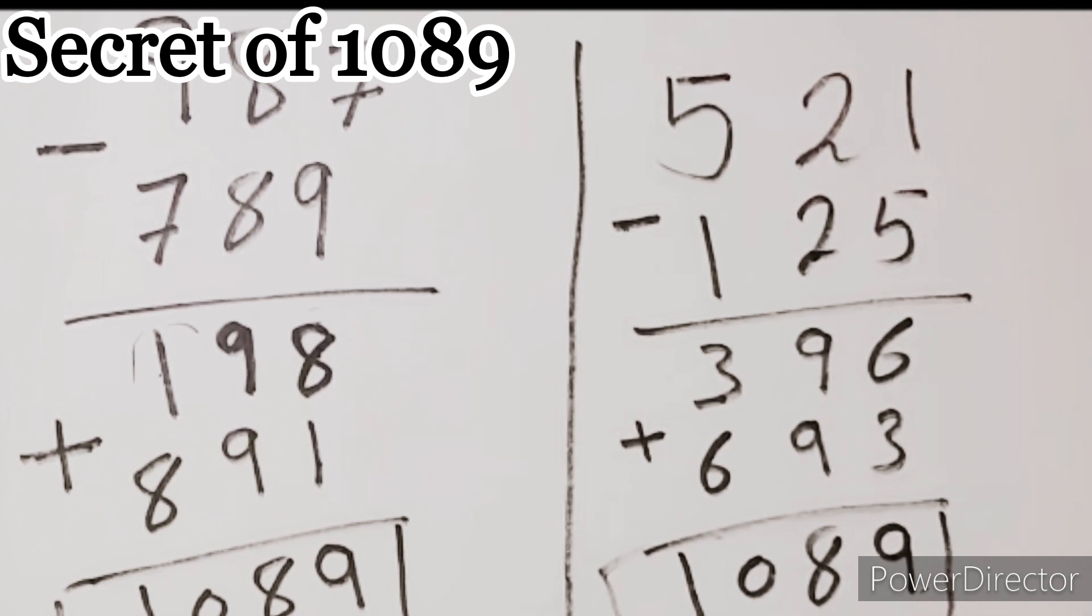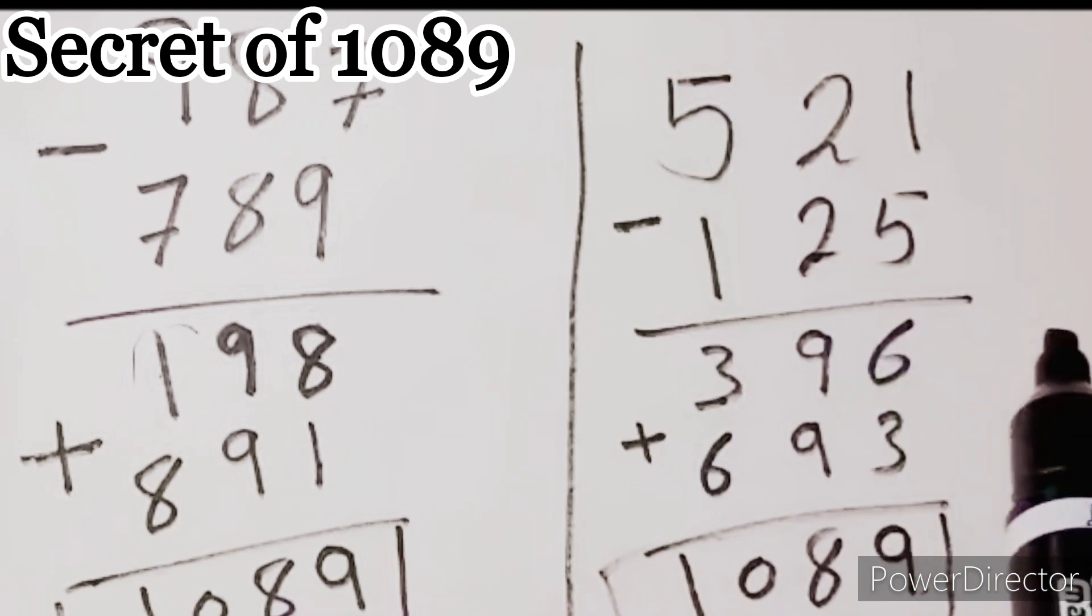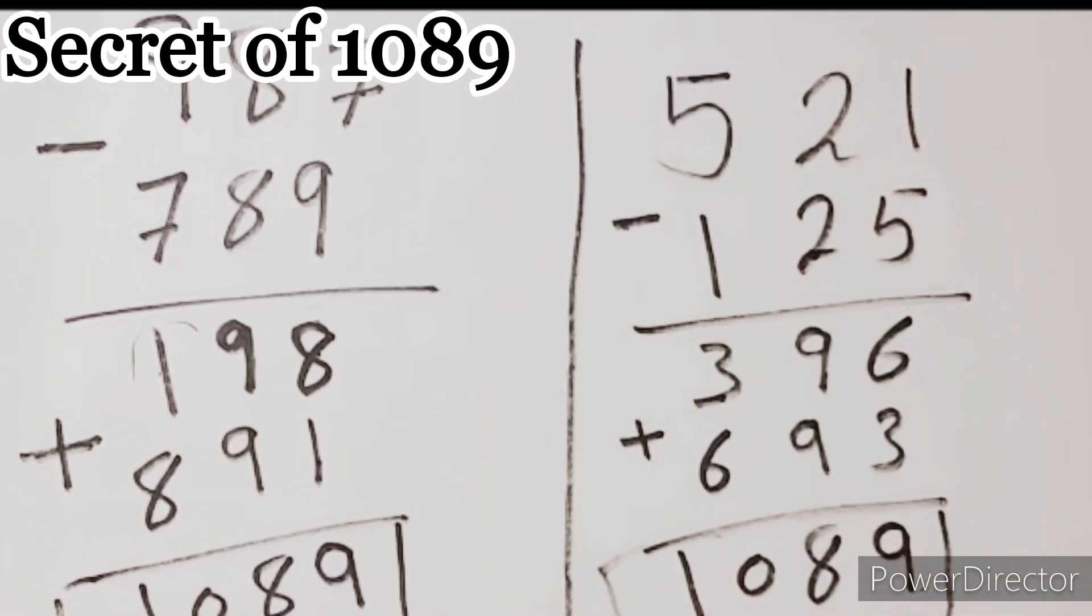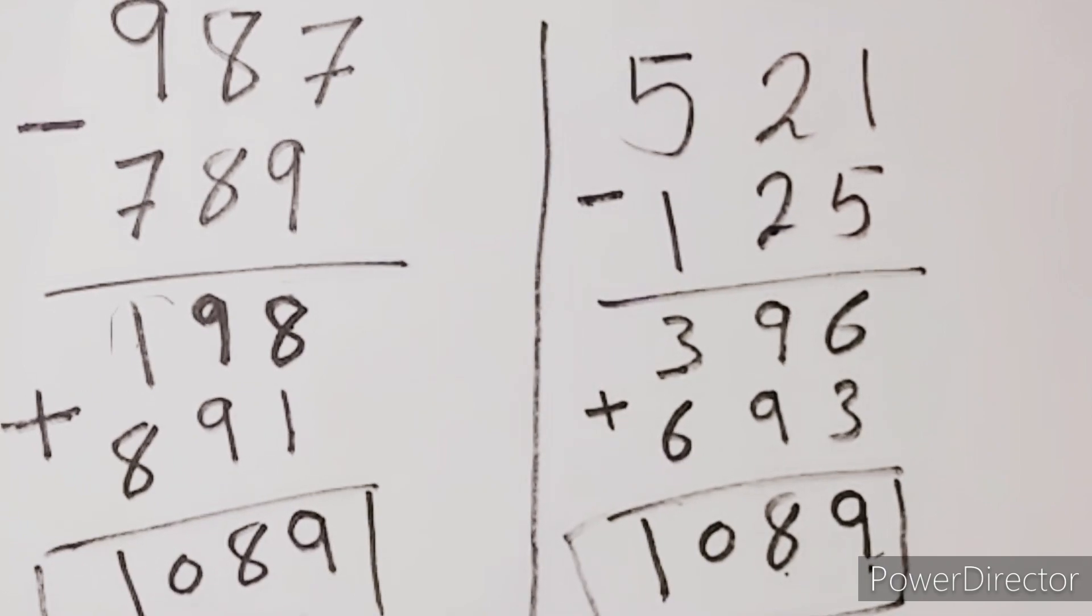And you can try any number consists of three digits. In all cases, the result will be 1089. See you in another video, bye-bye.